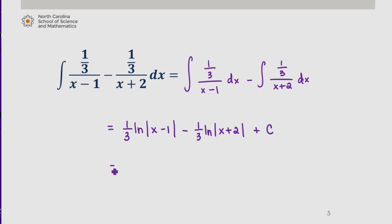We can then use log laws to clean this up by writing 1 third times natural log of the absolute value of x minus 1 over x plus 2 plus c.